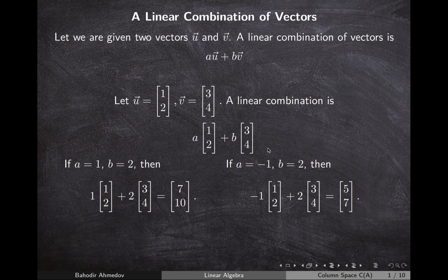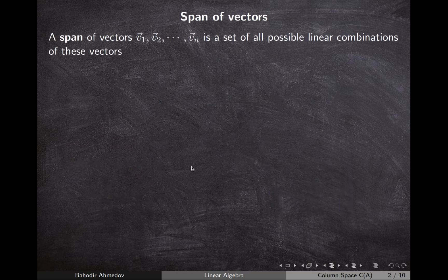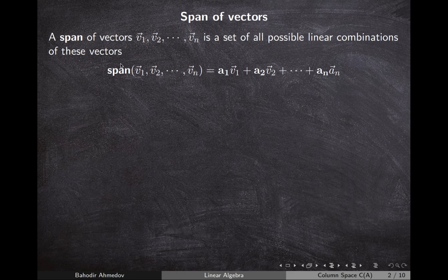In general form, a linear combination of two vectors can be written like this. We call the span of n vectors the set of all possible linear combinations of those vectors. Mathematically, the span is obtained by multiplying each vector by some constant, for all possible values of those constants.